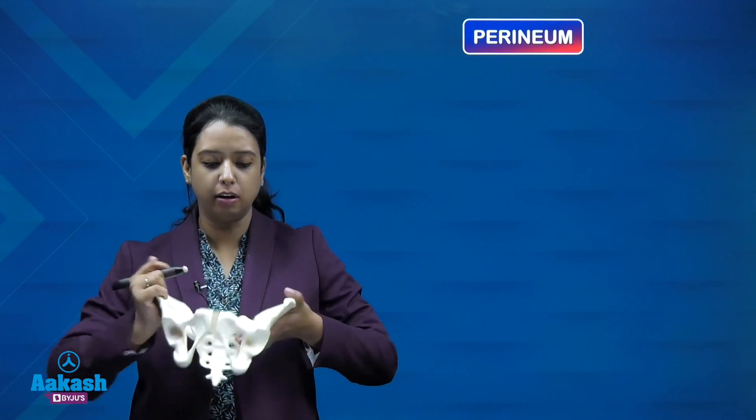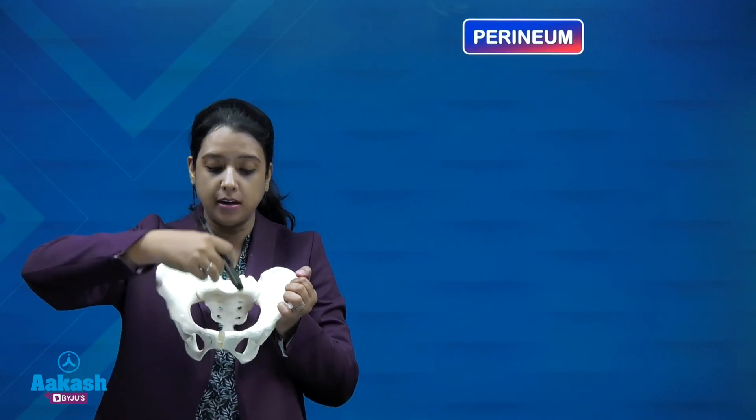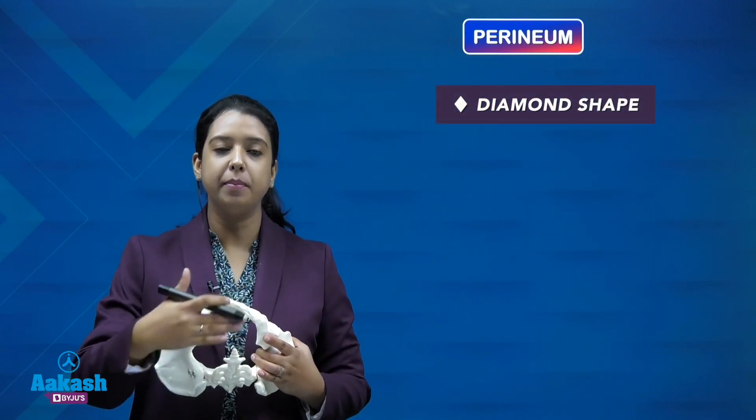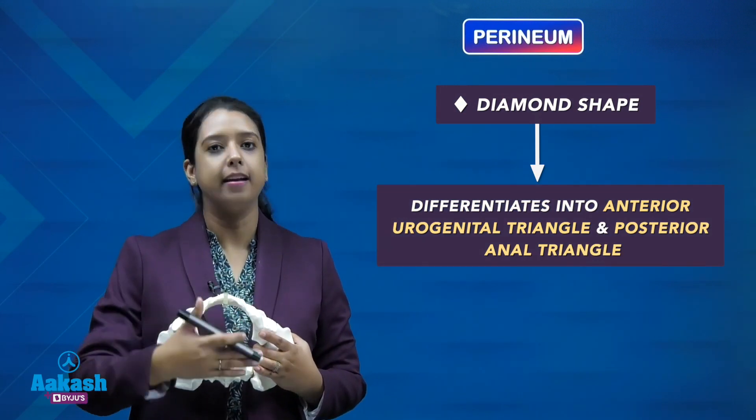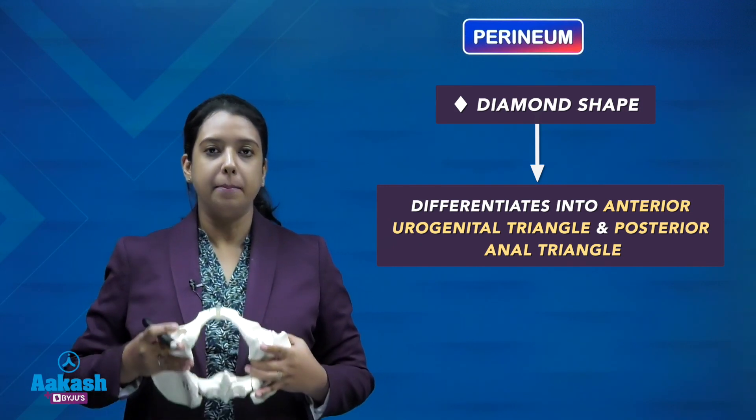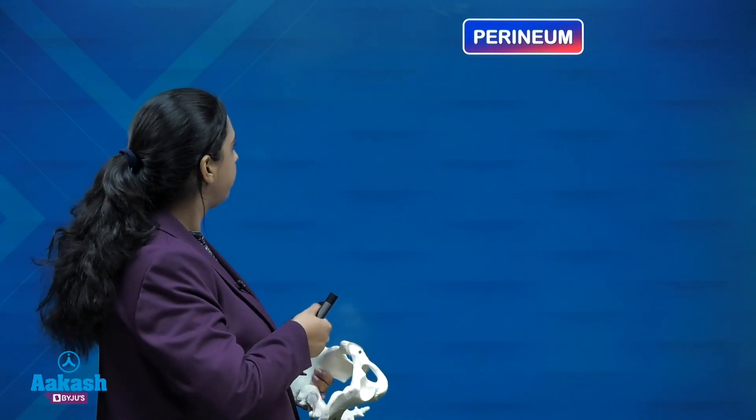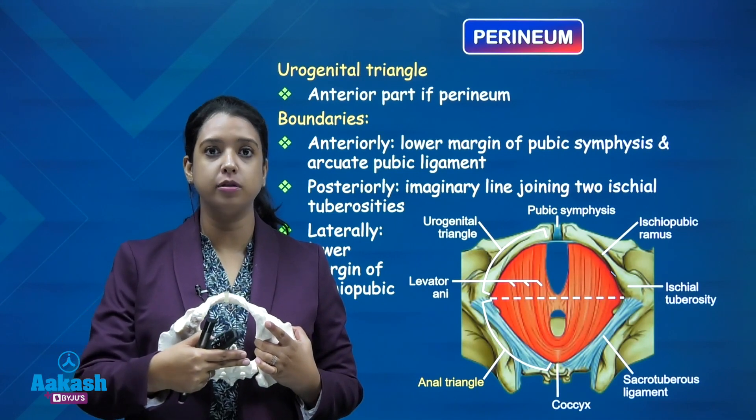The area below the levator anii is perineum. Levator anii is attached in the obturator fascia as a fan-shaped muscle. Below this is perineum and we start studying it from here. Perineum corresponds to the boundaries of the pelvic outlet and is diamond-shaped. This diamond-shaped perineum can be differentiated into the anterior urogenital triangle and the posterior anal triangle. The perineum lies between the buttocks in the lower trunk.